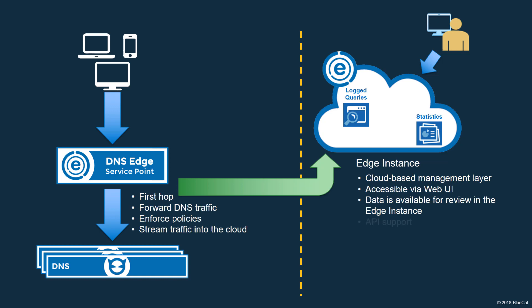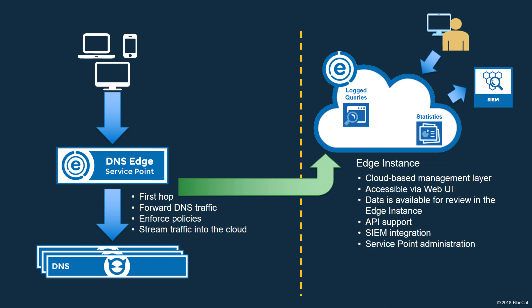DNS Edge supports the use of API calls to access data, to perform administrative tasks, and to support automation and integration. API support allows for integration with systems like SIEM. This allows data to be pulled from the Edge instance and analyzed using applications such as Splunk. Service Points are configured in the Edge instance. Policies, domain lists, and other configuration elements are also created and managed there.